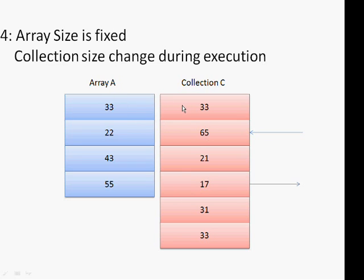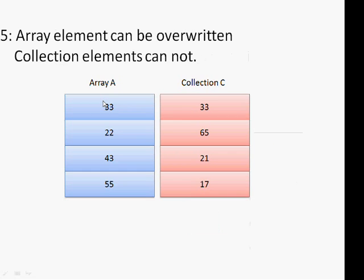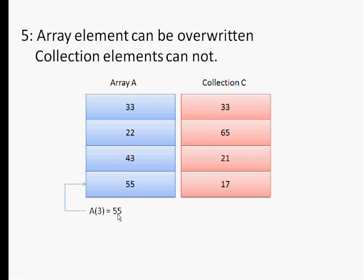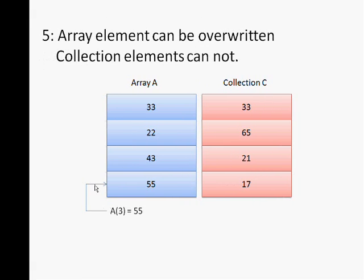Now let's go to the array elements and how you can overwrite them. If you write something like a of 3 equals 55, it's actually valid and you can do this. It will access the memory content and overwrite it. While in collection, if you wrote something similar,